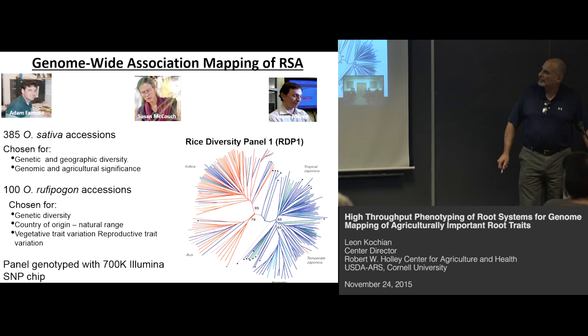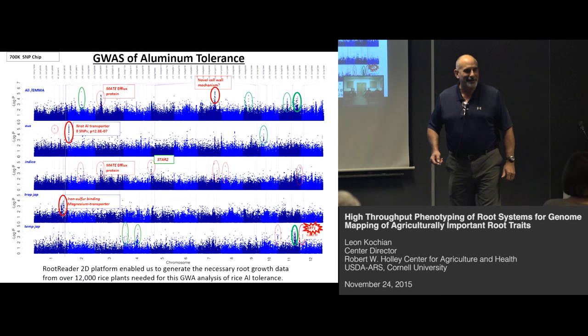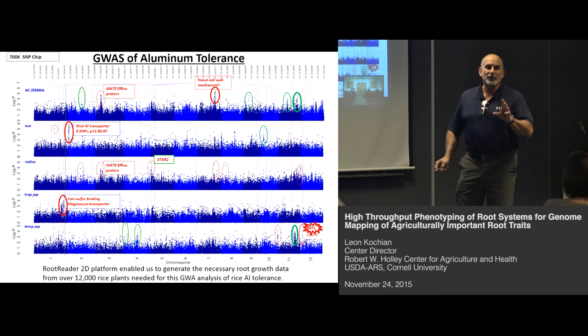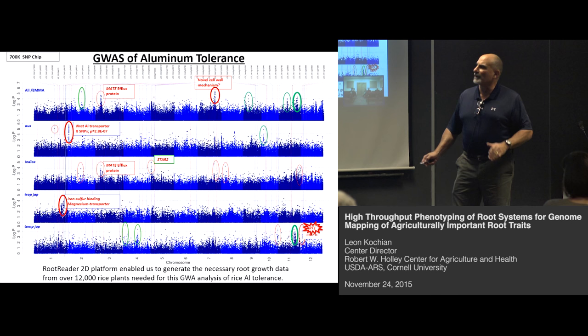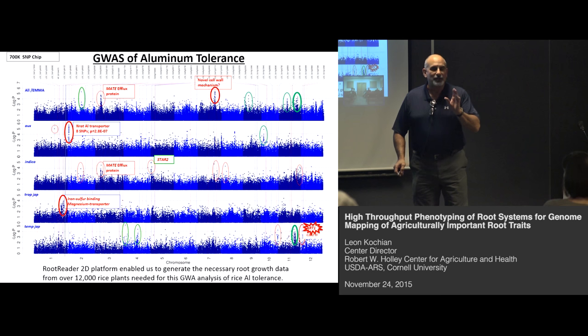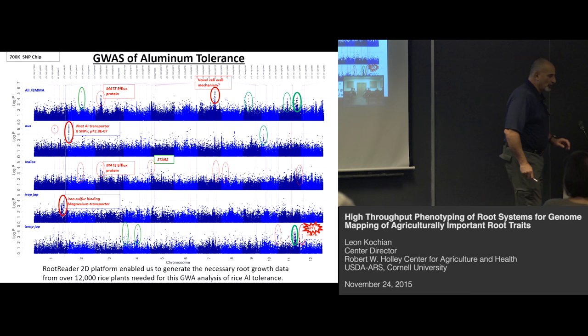From the GWAS Manhattan plots, we get more information if we analyze by subpopulation. We found interesting peaks overlapping with candidate aluminum tolerance genes that others had identified by forward genetics but for which no natural variation had been characterized. We validated a number of these aluminum tolerance genes; for example, with one aluminum transporter, genetic variation confers sensitive and tolerant haplotypes that result in better or weaker aluminum transport and aluminum tolerance. Root Reader 2D made this kind of large-scale analysis possible.